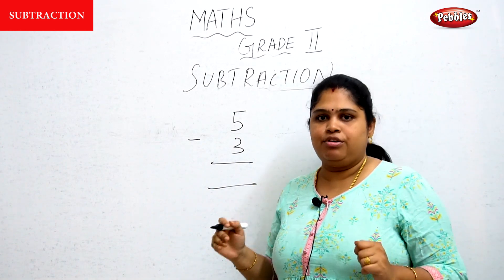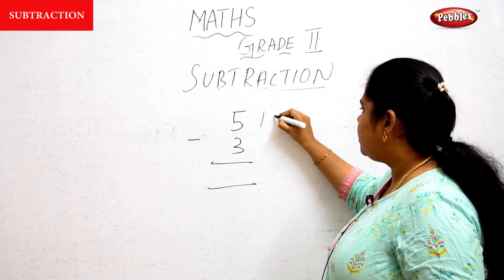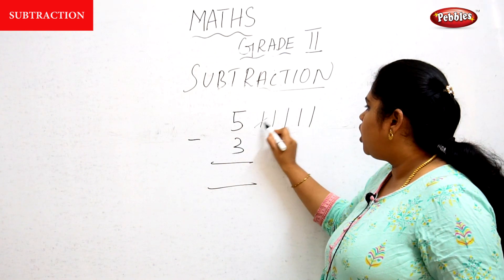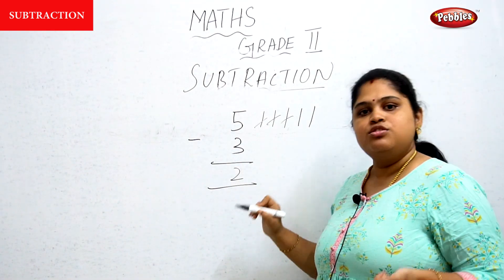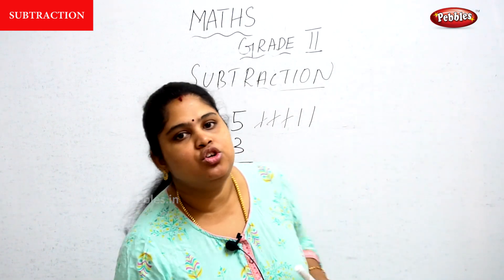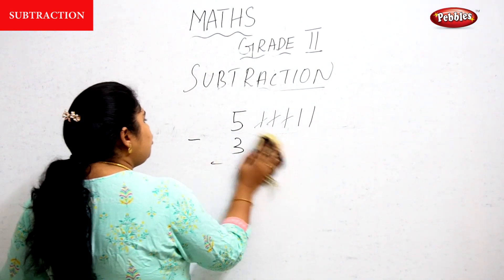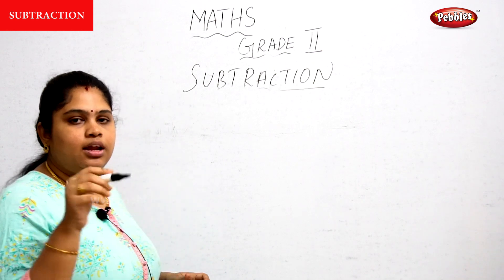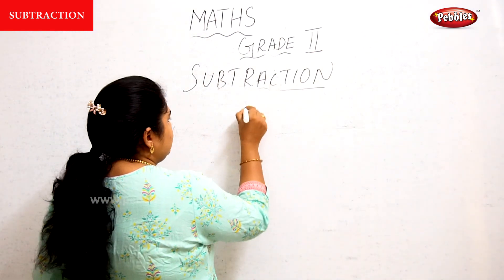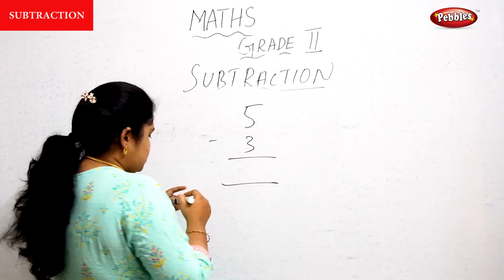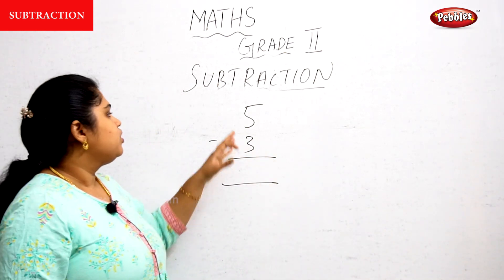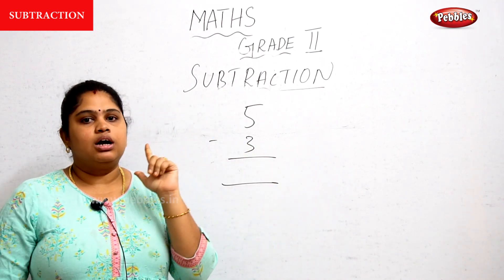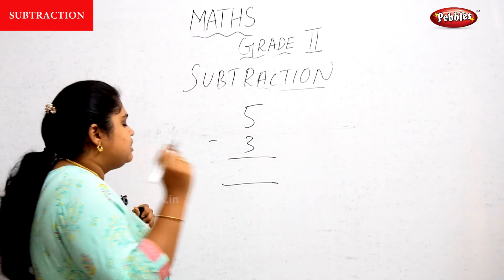At the basic level, you already studied subtraction. You drew five dashes and struck out three. The balance would be two. You studied this type of subtraction in your first standard syllabus. Now you are grown-up children, so you don't need to put sticks and strike them out. Leave five fingers — three numbers are here, so you cut three and two is the balance.